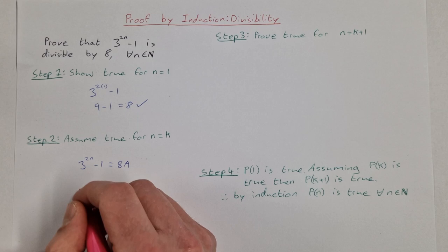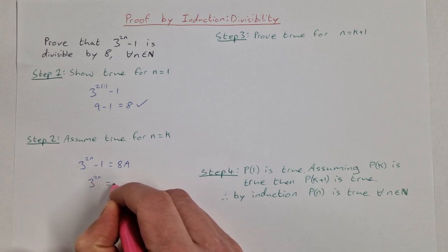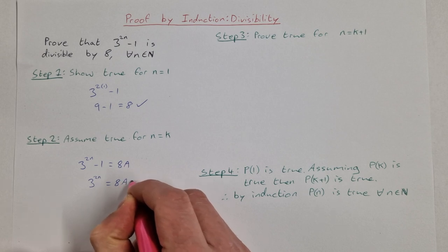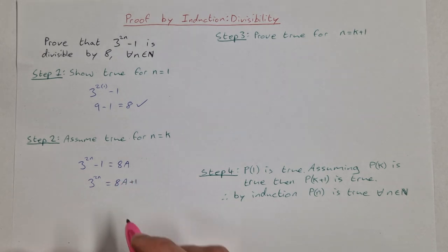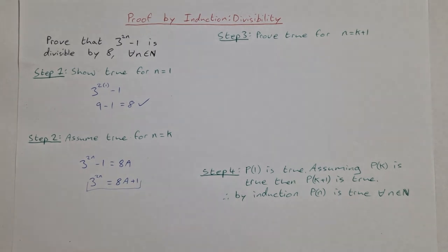We're going to do a slight manipulation here and say that 3 to the power of 2k equals 8a plus 1. We're going to use this in step 3 as a substitution.